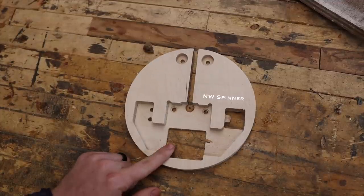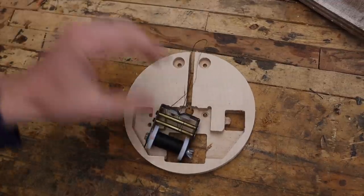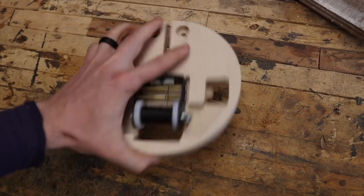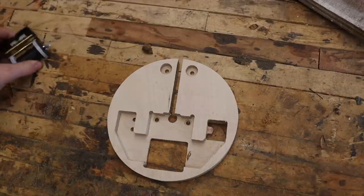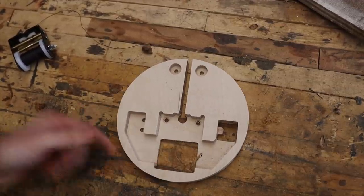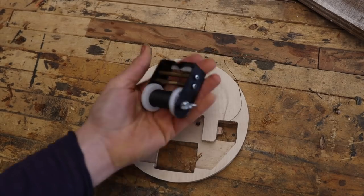This right here is the NW spinner. The idea is that you throw your serving jig in there and then it goes on your string and you're able to twist it really fast. But the thing is with this one, you need the special serving jig that this company sells.